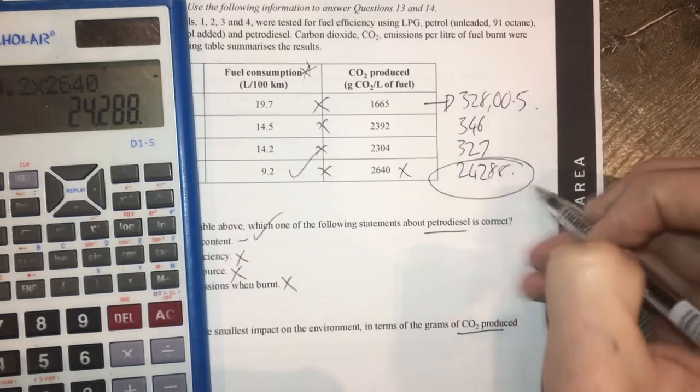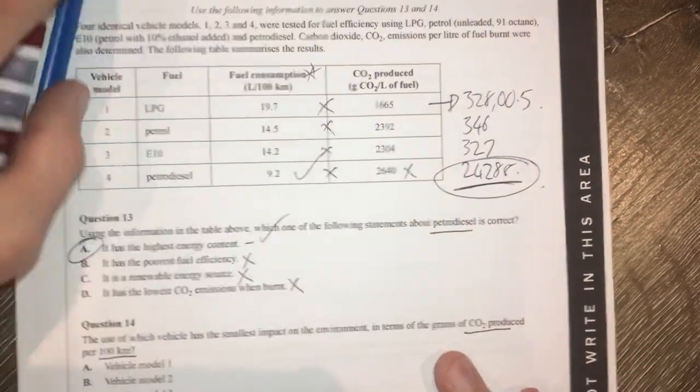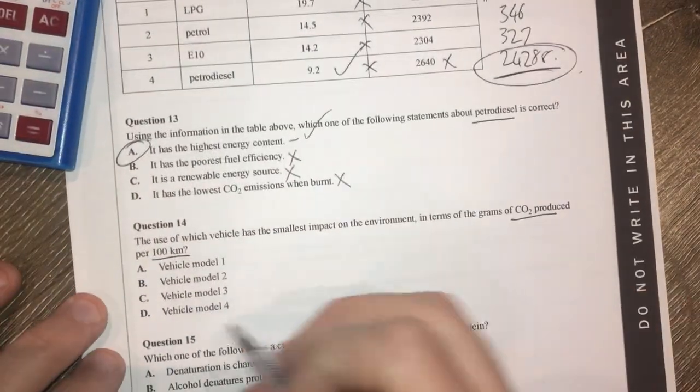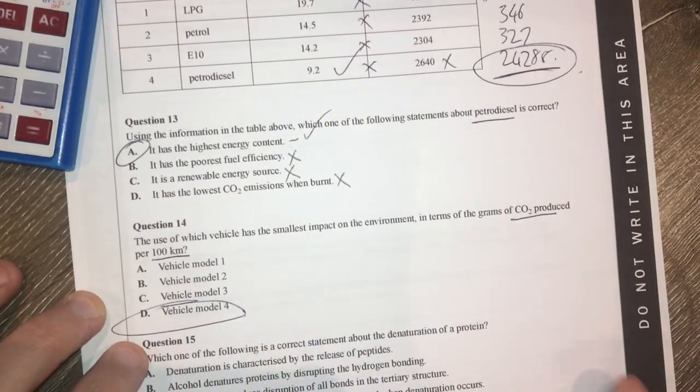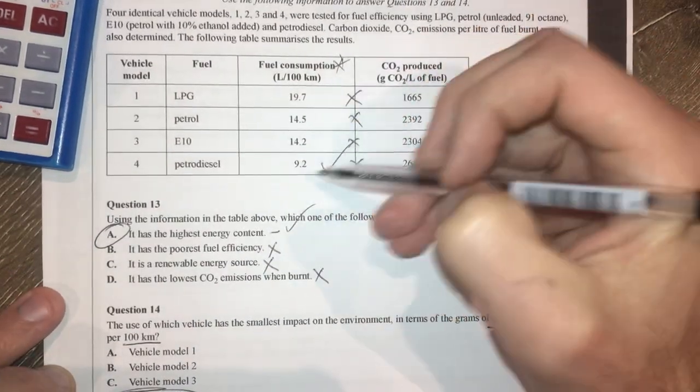And 9.2 times 2640 gives me 24288. Well, looking at this, I can see that that one here is going to be the lowest. So interestingly, it is petrodiesel. Petrodiesel has the smallest impact on the environment if you're looking at all these things here.